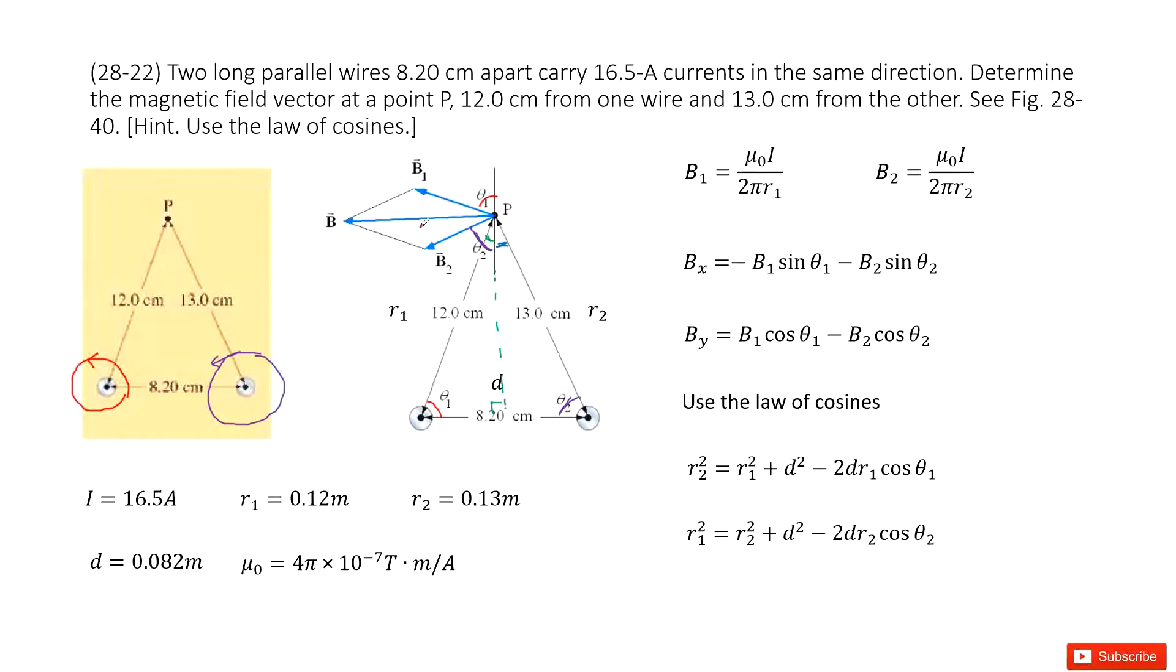So Bx is negative because it is pointing in the negative x direction. So negative B1 times sin theta 1, right? So B1 projected this way. So this one is B1 sin theta 1.